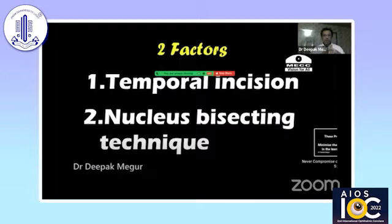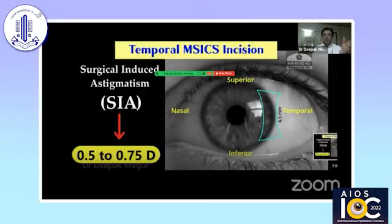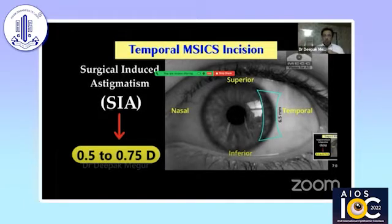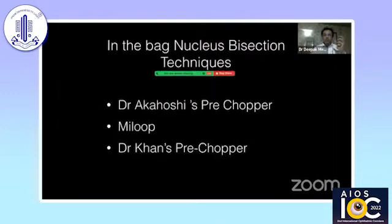These two principles are: shifting to a temporal incision, and learning and mastering nucleus bisecting techniques so that we can manage most nuclei consistently with about a six to six-and-a-half millimeter incision. With temporal incisions, induced astigmatism is very significantly lesser. In my study, with a properly constructed incision in the temporal quadrant, I have never gotten astigmatism of more than 0.75 diopters — it's always 0.5 or lesser. Following these principles, we can definitely achieve an excellent post-op outcome.